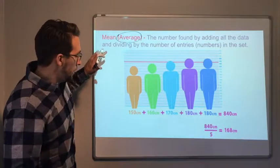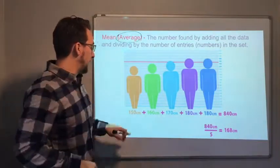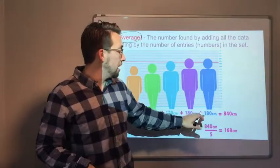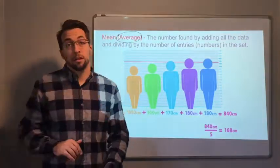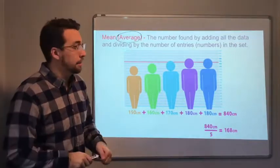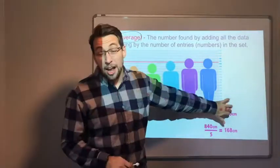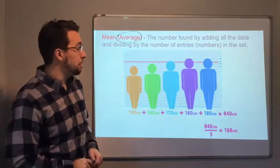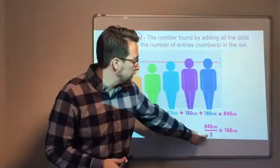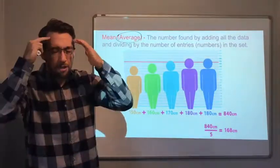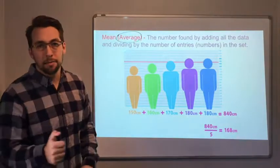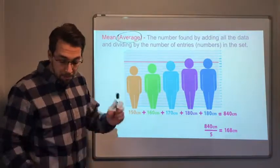If we have these different people at 150 centimeters, 160, 170, 180, 180, this is their height. We're going to find the average, the mean of their height. All of that equals 840 centimeters. 840 divided by how many people? 1, 2, 3, 4, 5 divided by 5. The average, the mean height is 168 centimeters.